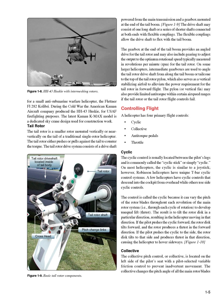Tail Rotor. The tail rotor is a smaller rotor mounted vertically or near-vertically on the tail of a traditional single rotor helicopter. The tail rotor either pushes or pulls against the tail to counter the torque. The tail rotor drive system consists of a drive shaft powered from the main transmission and a gearbox mounted at the end of the tail boom. The drive shaft may consist of one long shaft or a series of shorter shafts connected at both ends with flexible couplings. The flexible couplings allow the drive shaft to flex with the tail boom. The gearbox at the end of the tail boom provides an angled drive for the tail rotor and may also include gearing to adjust the output to the optimum rotational speed — typically measured in revolutions per minute (RPM) — for the tail rotor.